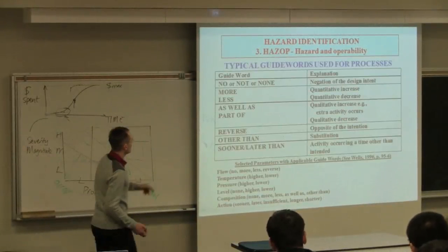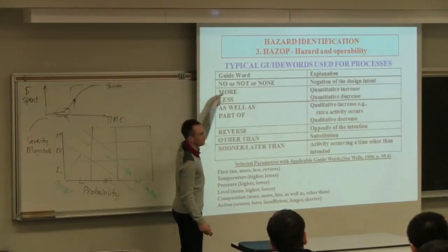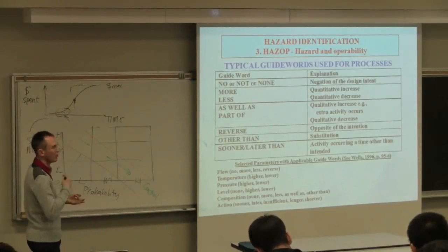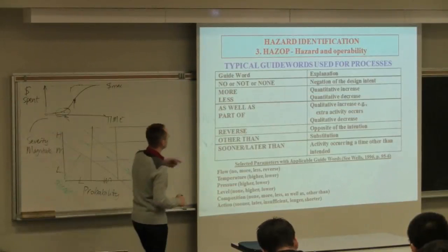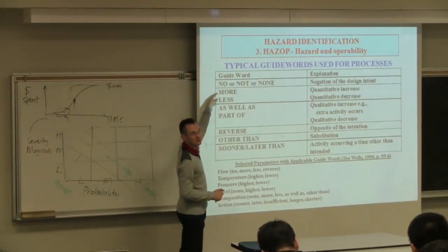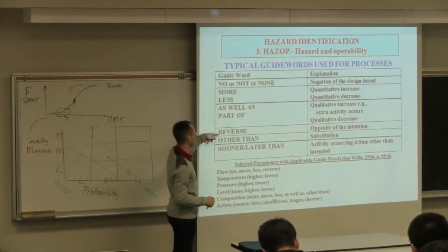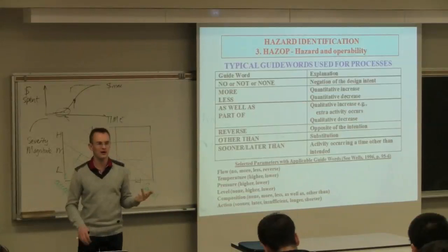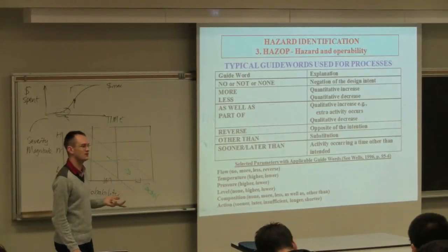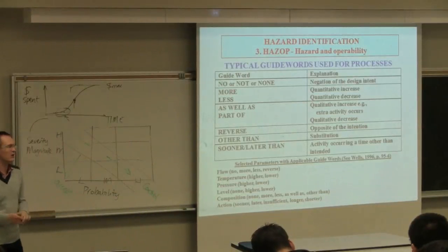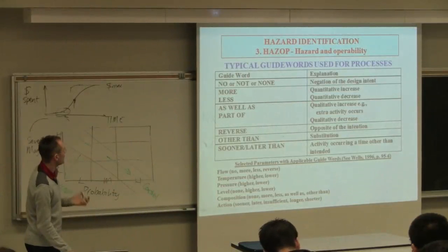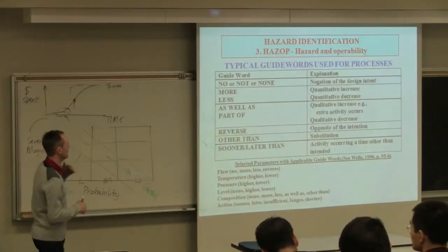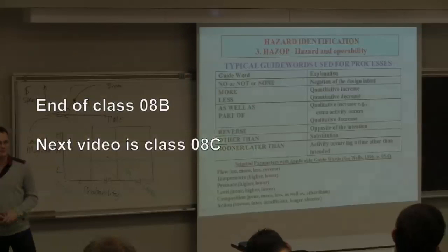The first guide word is less. It simply implies less than the normal value. In other words, what is going to happen if the flow is less than the normal value. Then we'll look at cause, consequence, and action. We'll do that. And then we'll go to our next guide word. We'll look at more. What is the cause, consequence, and action we should take if we see more than normal flow? Or what if we see no flow? We'll go through every guide word for every node for every parameter. We'll work through a case in our next class.